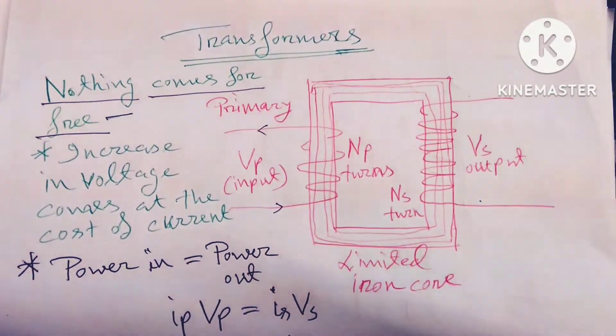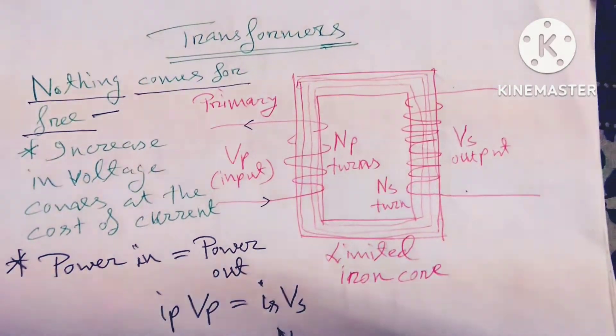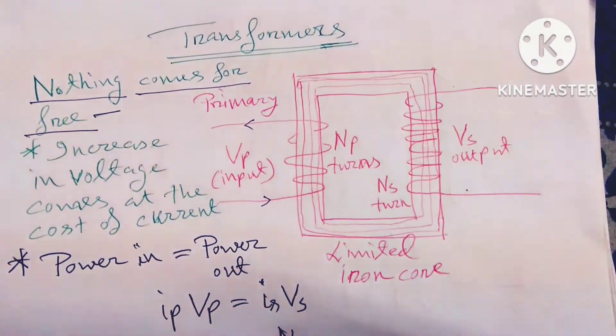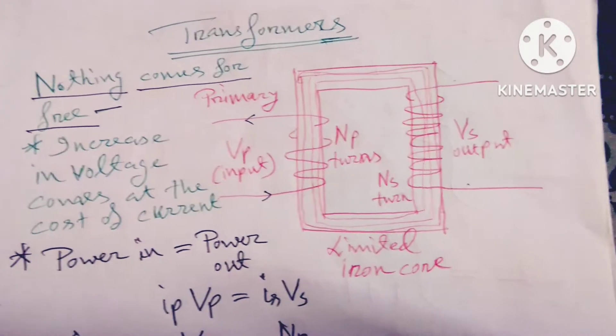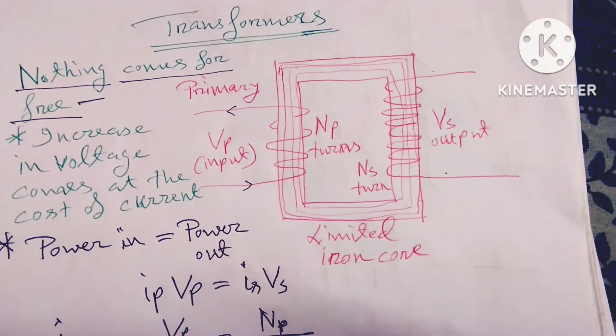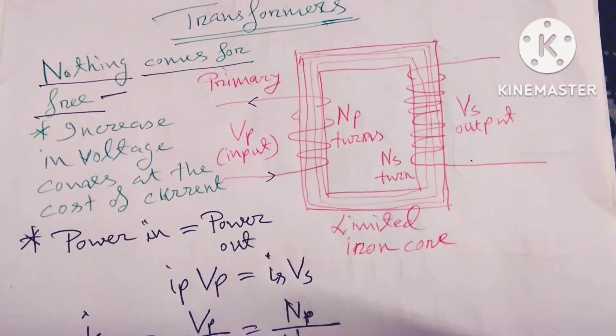Hello dear friends, welcome to my channel. Today's discussion is transformers. So friends, you see that limited iron core, primary Vp input, Np turns and Ns turns, and Vs equals output. So increase in voltage comes at the cost of current.